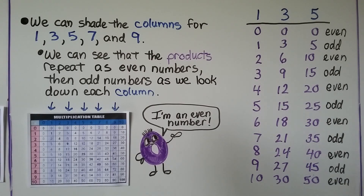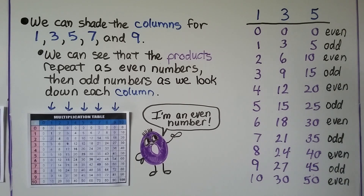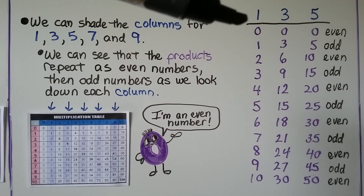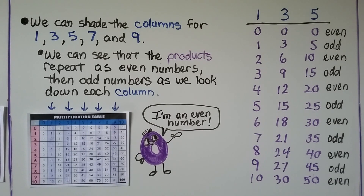We can shade the columns — remember, columns go down — for 1s, 3s, 5s, 7s, and 9s. We can see that the products repeat as even numbers, then odd numbers, as we look down each column. So it goes even, odd, even, odd. Here are the products for the 1s, 3s, and 5s — as we go down the column they go even, odd, even, odd, all the way down. Remember that 0 is an even number because even numbers have a 0, 2, 4, 6, or 8 at the end.